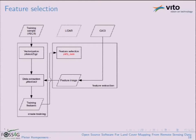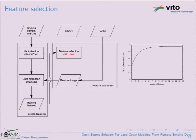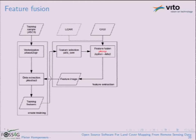A further step involves feature selection to address the curse of dimensionality in hyperspectral imagery. When dimensionality is too high relative to the number of training pixels, it becomes an ill-posed problem. Feature selection concentrates on the best features; beyond 16 spectral features, classification accuracy stopped improving. The 16 selected spectral bands were then fused with the LiDAR height information by concatenating them into one image, treating height as one extra band, and using that as input for the classifier.